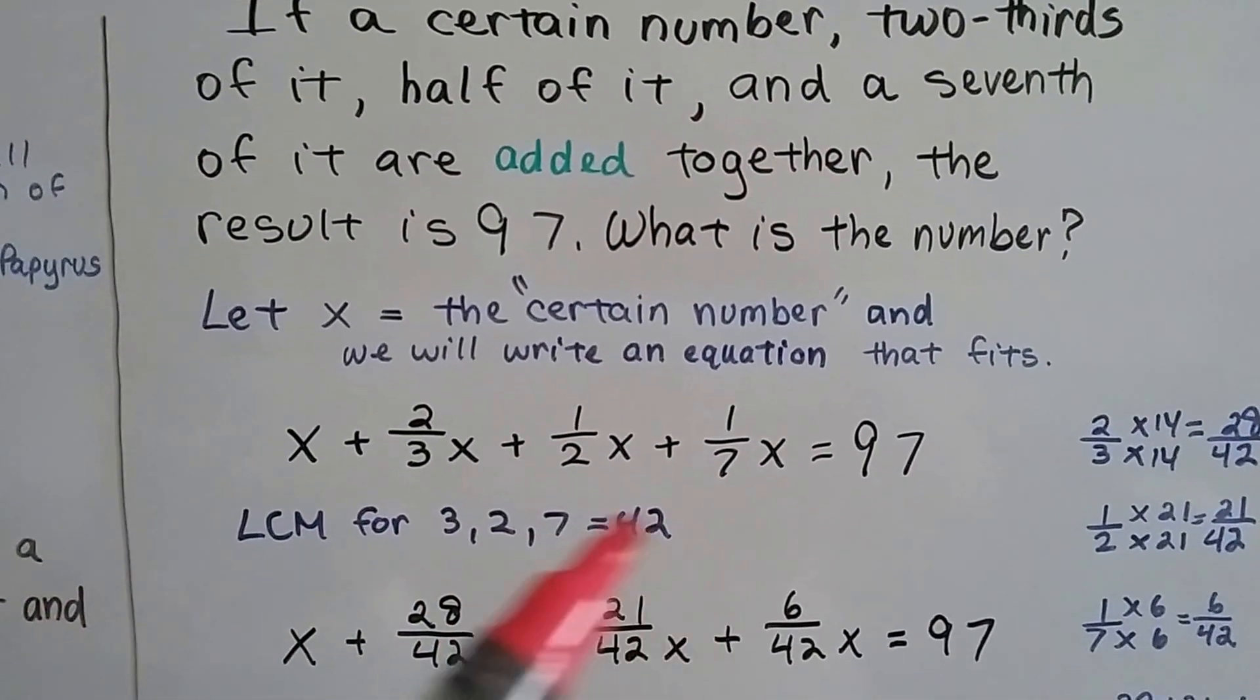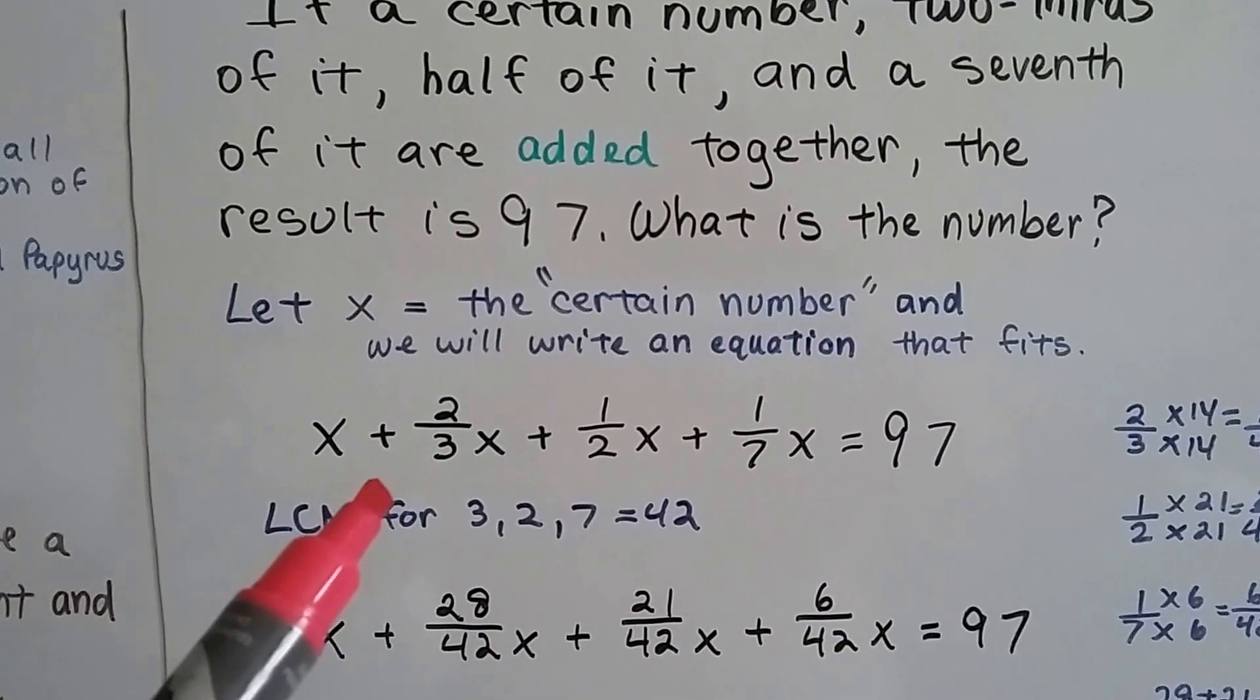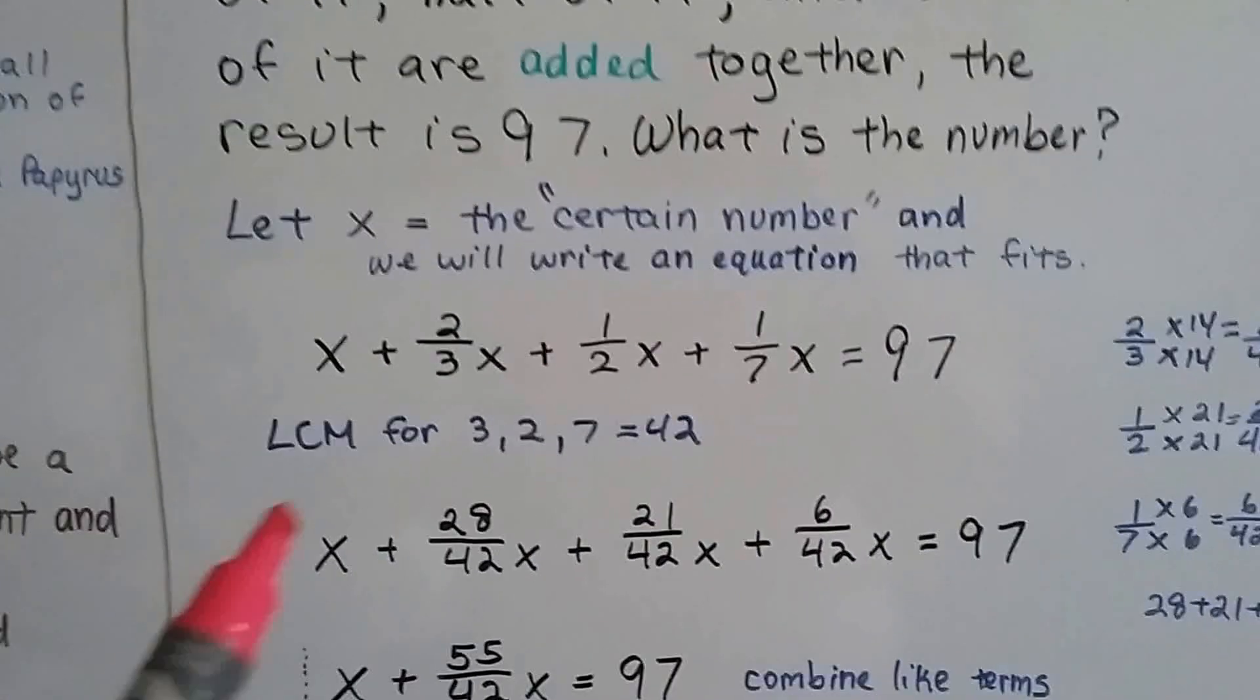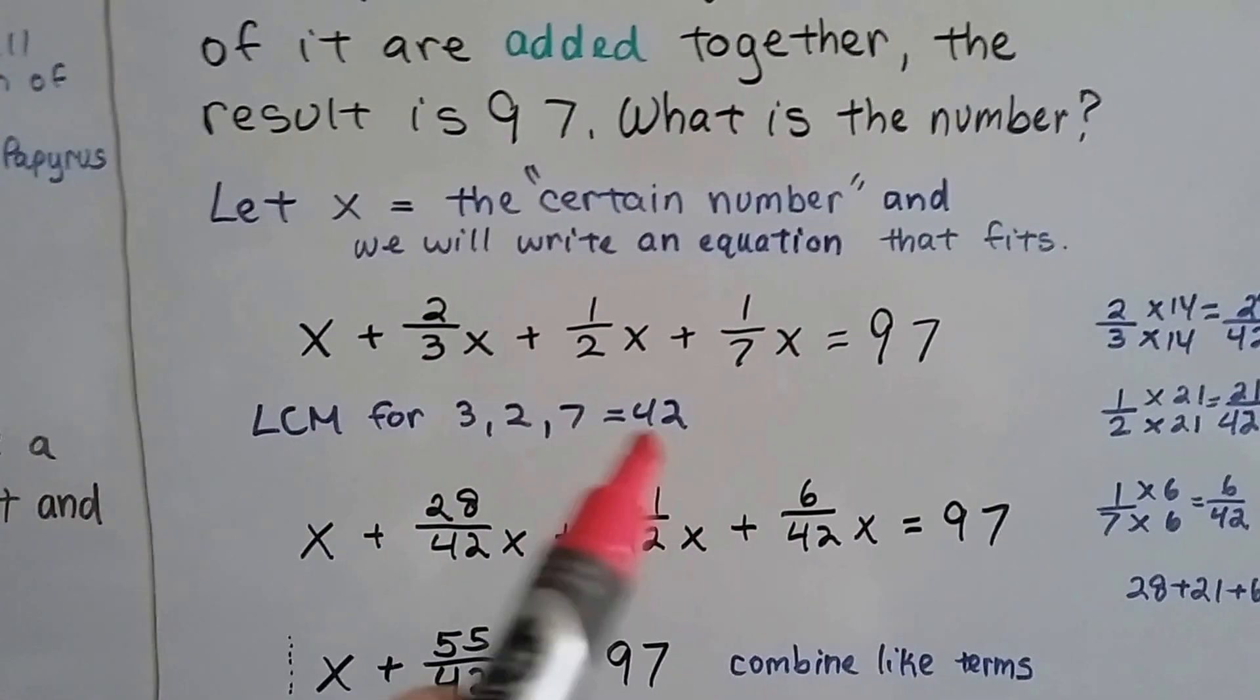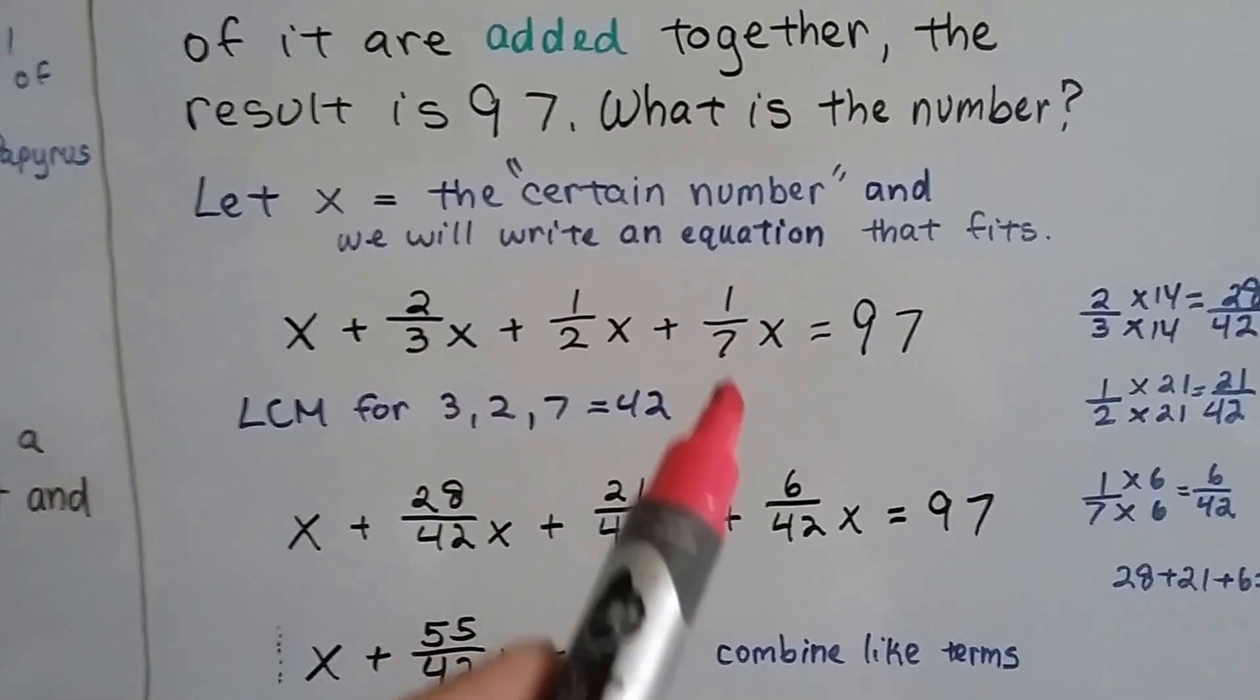We need to find the least common multiple for the 3, the 2, and the 7, the denominators. The lowest common denominator, so that we can add them. That's how we add fractions. So the lowest common multiple for 3, 2, and 7 is a 42, so that's going to be our least common denominator.